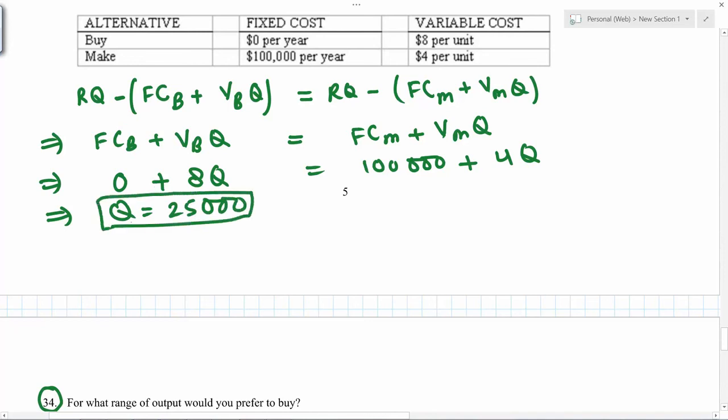So 25,000 will be the break even point. So you need at least 25,000 to really break even. And when you make more, then you are going to get the profits. So basically we can say that for the buy decision, the quantity could be from 1 to maybe 24,999.